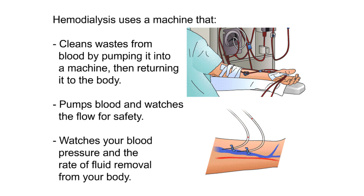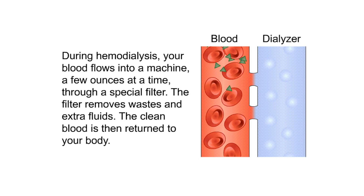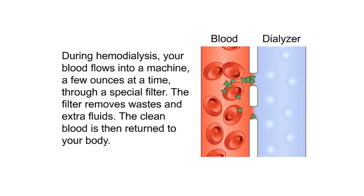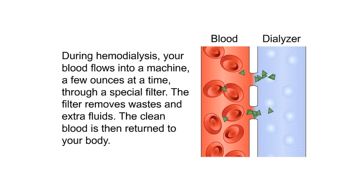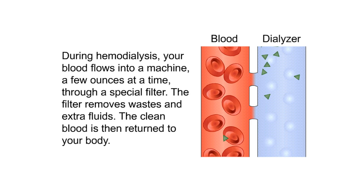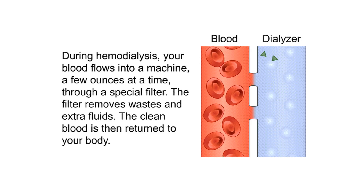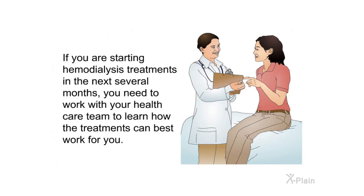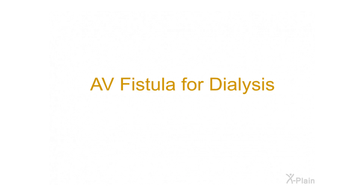The hemodialysis machine pumps blood and watches the flow for safety. It monitors your blood pressure and the rate of fluid removal from your body. During hemodialysis, your blood flows into the machine a few ounces at a time through a special filter that removes wastes and extra fluids. The clean blood is then returned to your body. If you are starting hemodialysis in the next several months, you need to work with your health care team to learn how treatments can best work for you.